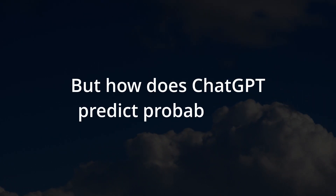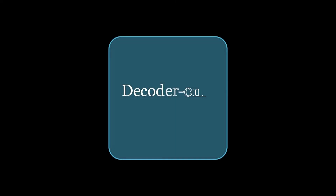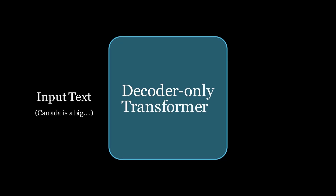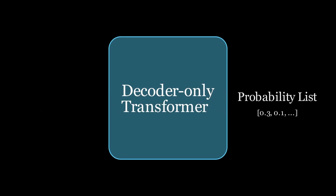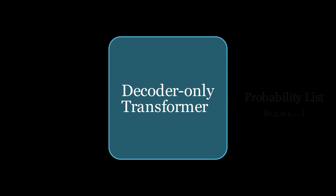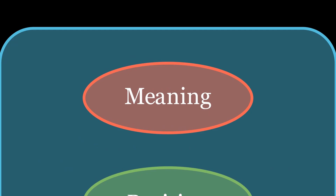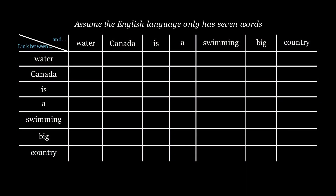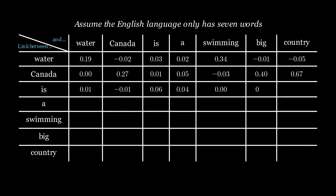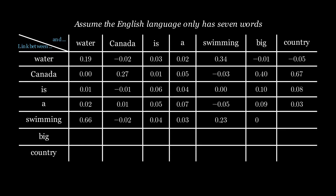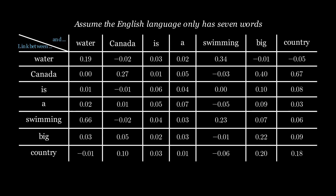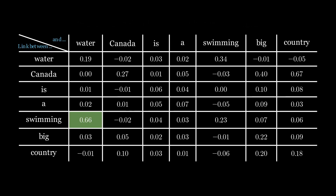How does ChatGPT predict probabilities? A transformer changes the input text into a list of predicted probabilities, where each element tells us the probability that a particular word should be the next word. This transformer has three main components. The first component calculates how closely each word ChatGPT has ever seen is linked to all other words — generating a number for each word pair. For example, the number linking 'swimming' to 'water' will be high, though the number linking 'water' to 'swimming' will be lower.